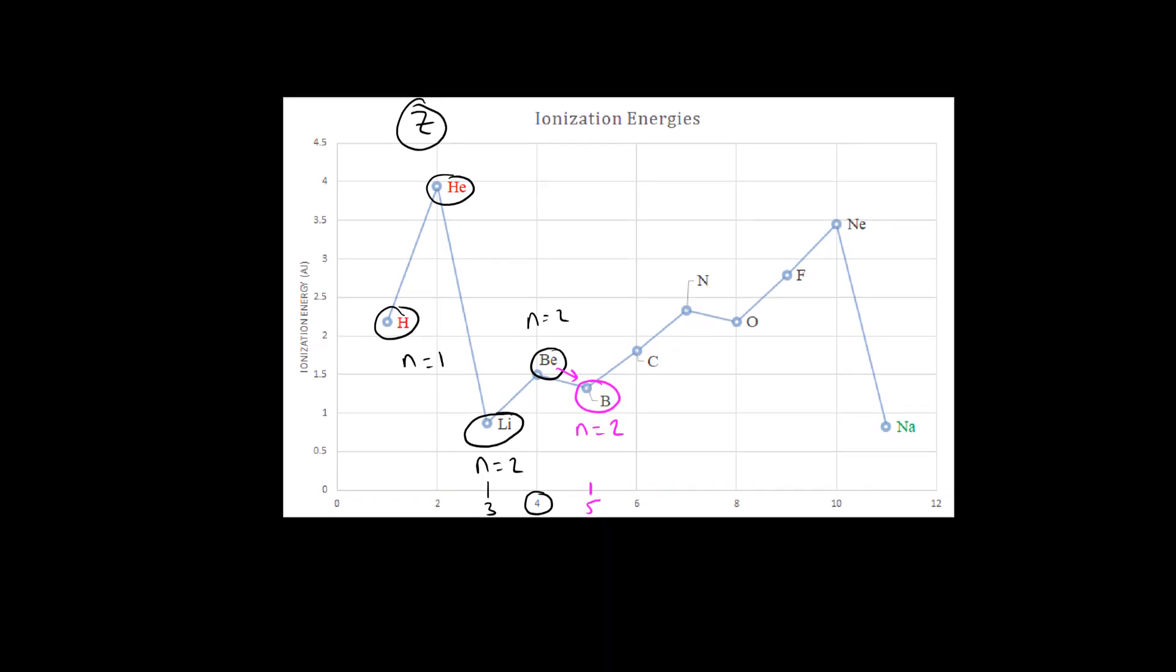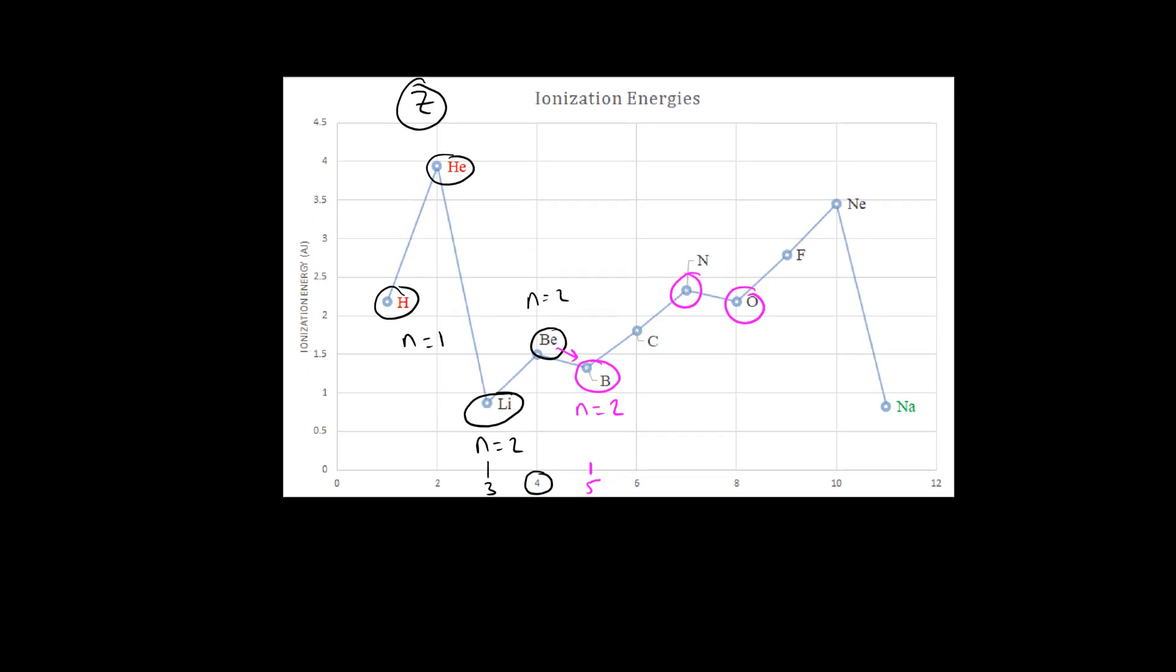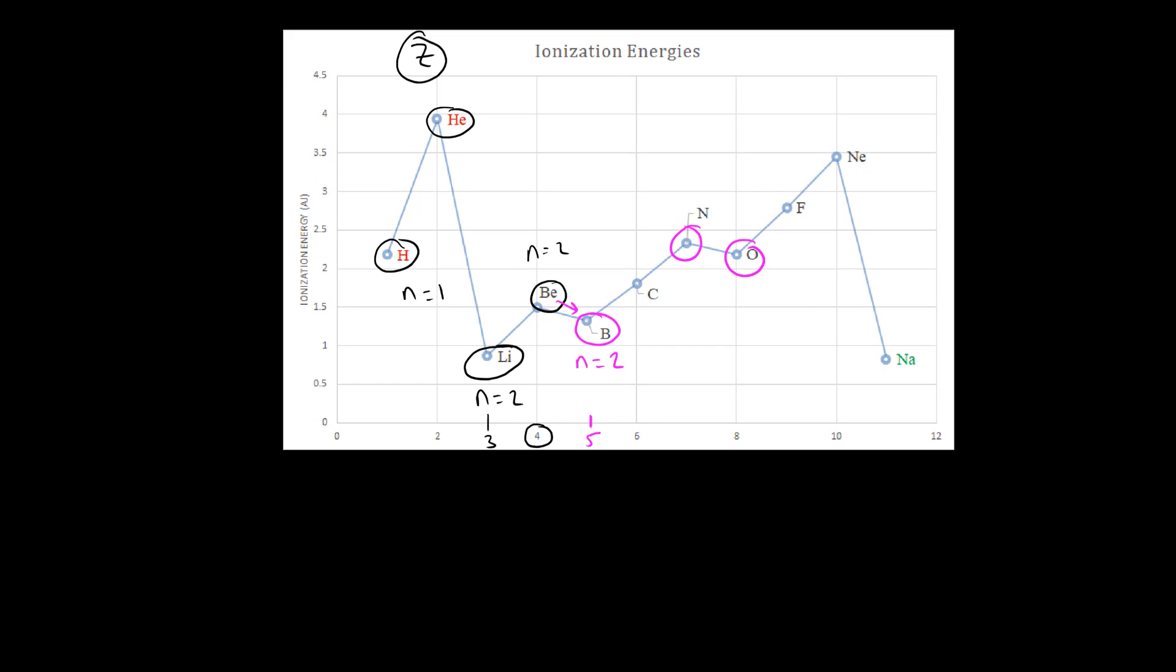We see this same deviation from our expected trend going from nitrogen to oxygen. We see a downhill trend within the same shell, even though the general trend, Coulomb's law, predicts that we should be increasing the ionization energy. So in both cases here, we can explain this exception based on the stability of electron configurations.